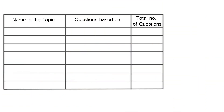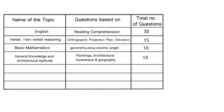There were 15 questions from general knowledge and architectural aptitude, covering topics like Nakshi Temple, Akbar, and geography. Moving on, there were 10 questions to judge your analytical skills with puzzles, riddles, proportions, ratios, and percentages based on a given image.